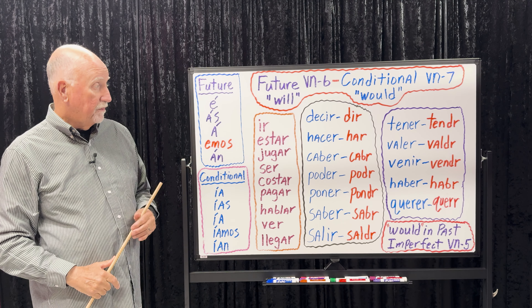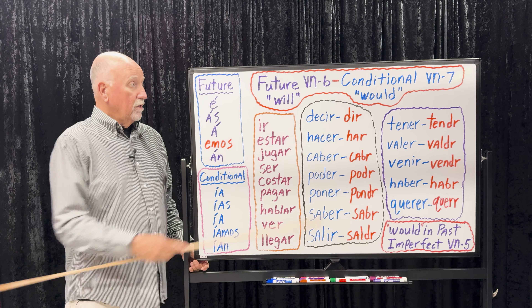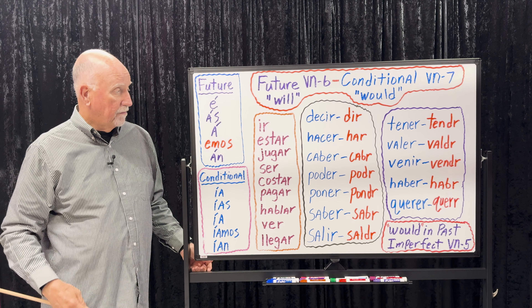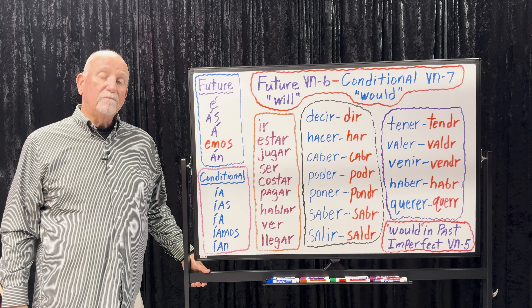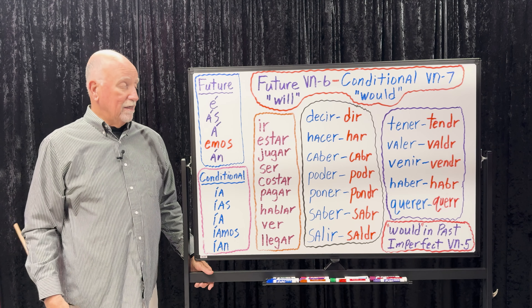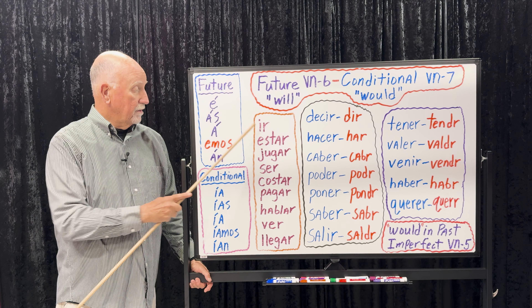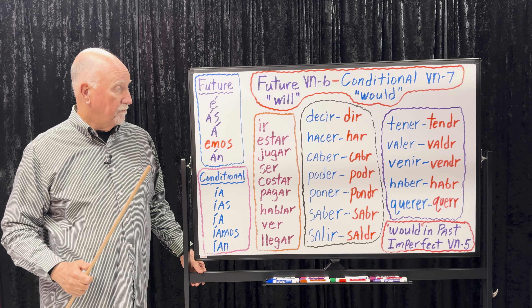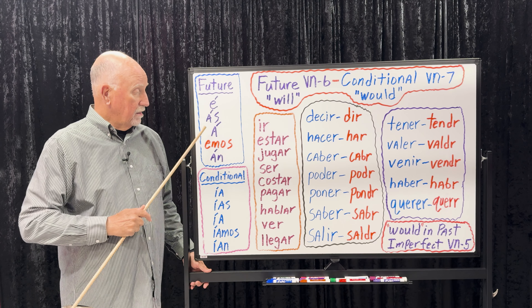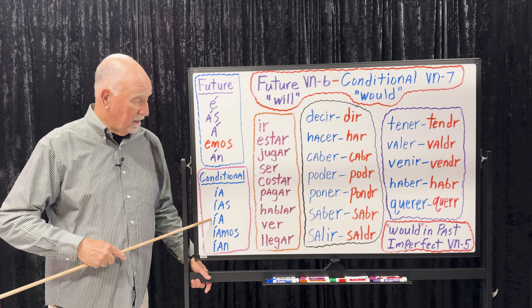Quick review: 'It would be a lot of fun' — would is conditional, ser — sería muy divertido. 'There would be problems' — conditional — habría problemas. 'We will go with you' — will is future, ir — iremos contigo. 'It will cost a lot' — future, costar — costará mucho. 'It would cost a lot' — conditional — costaría mucho.